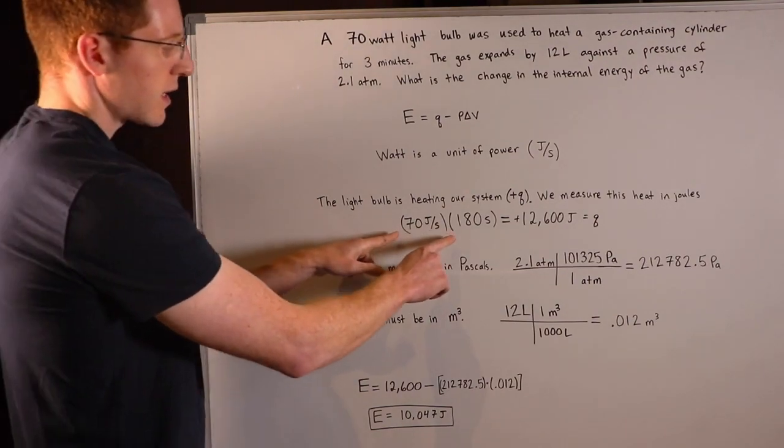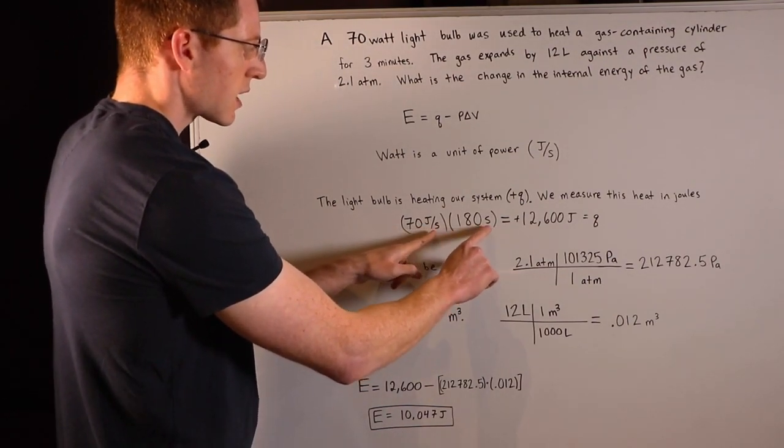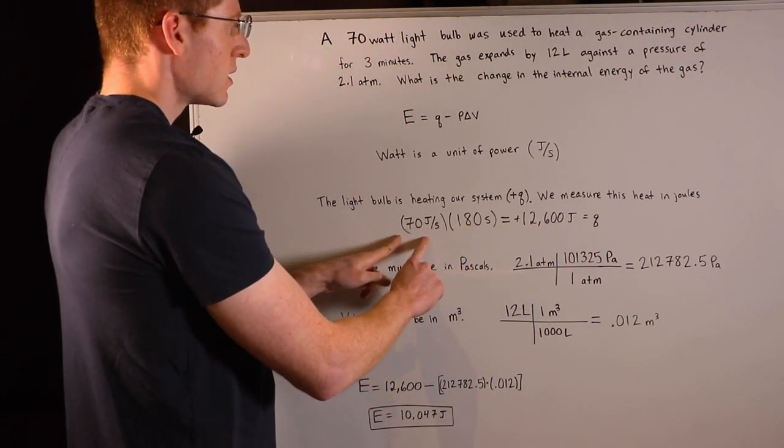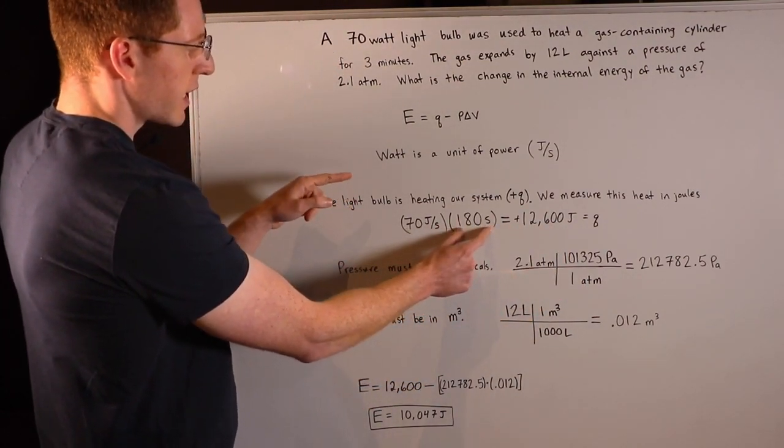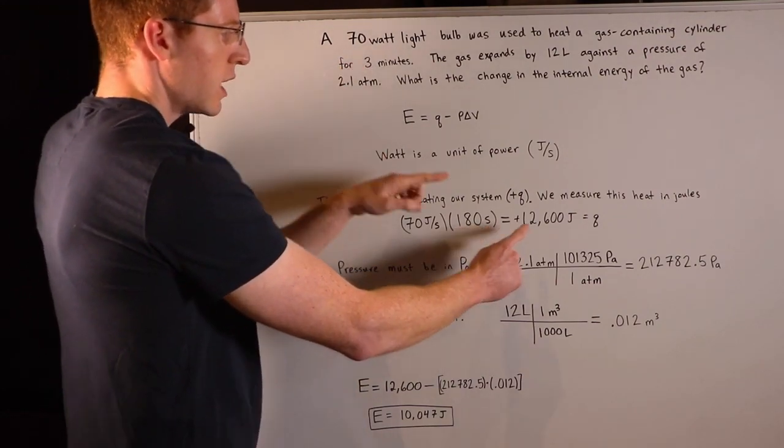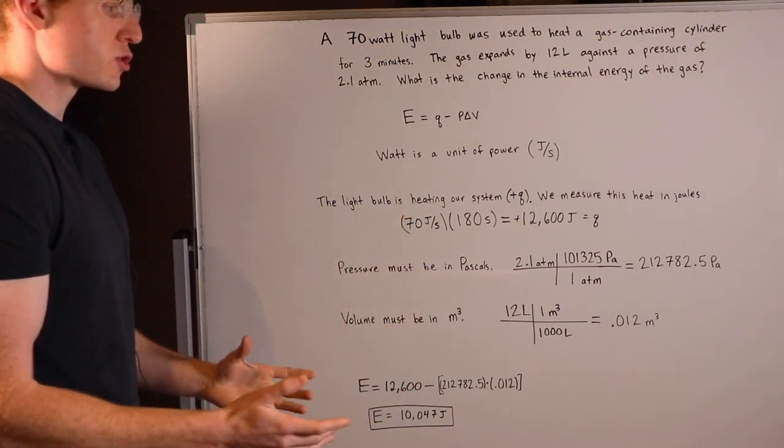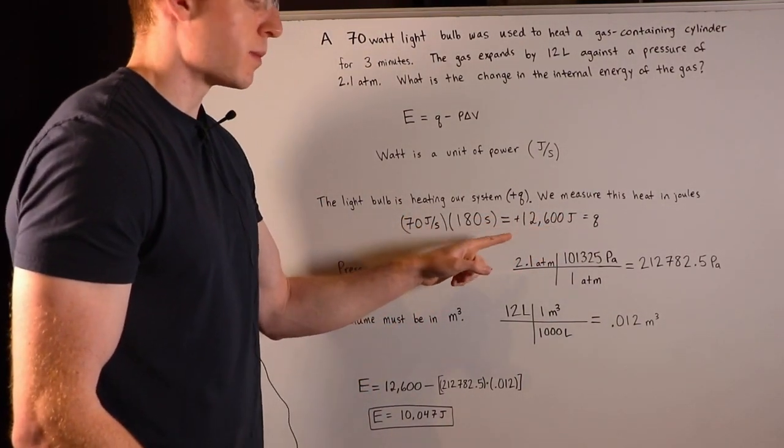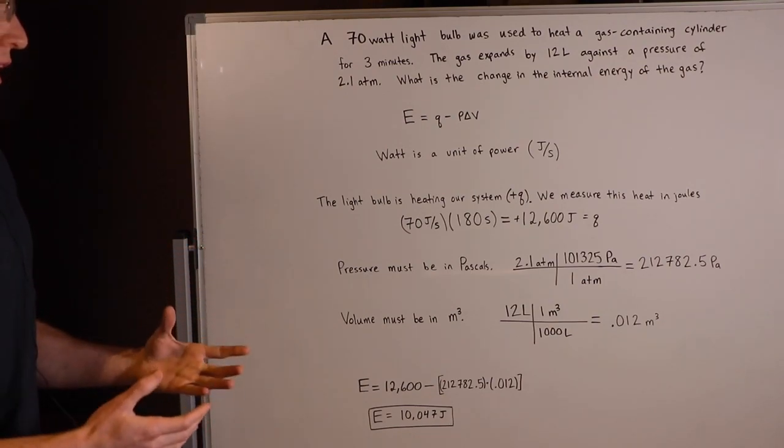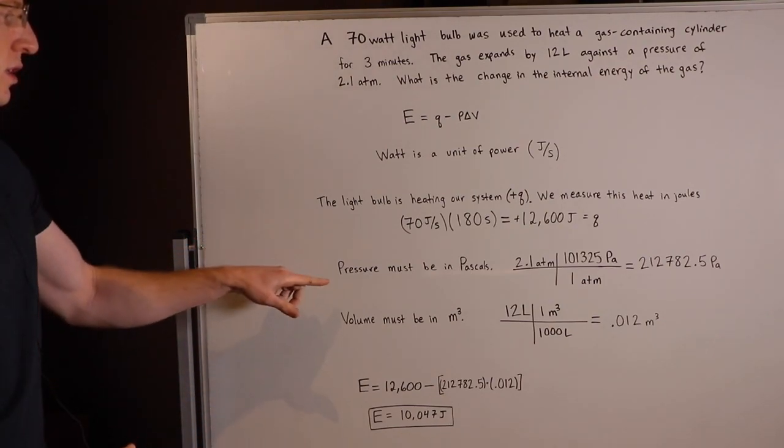So if we multiply joules per second by seconds, the seconds will cancel out, and then we'll have joules. So 70 joules times 180 seconds, notice how I had to change the three minutes to 180 seconds, will give us 12,600 joules as our Q. And remember, that's a positive Q. We're adding that heat into the system.